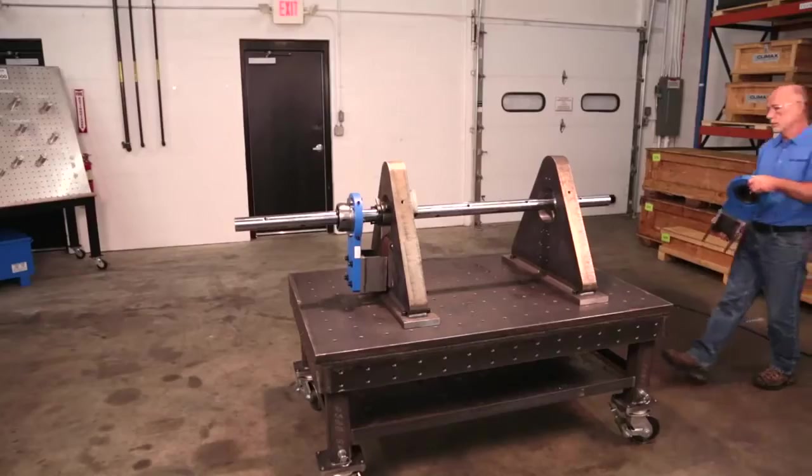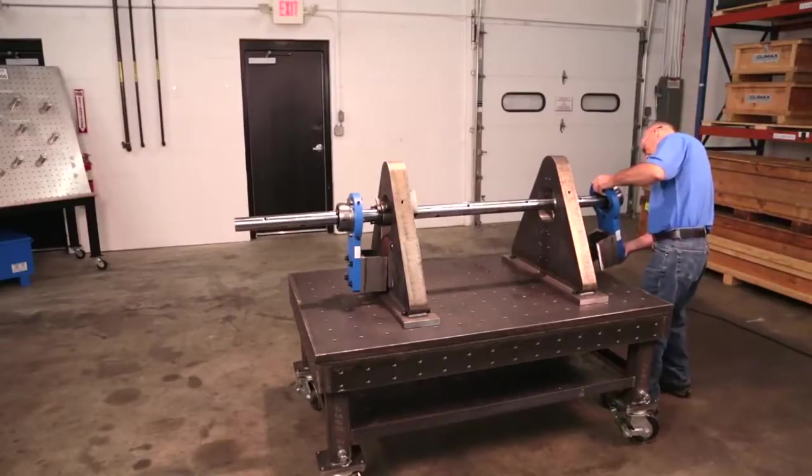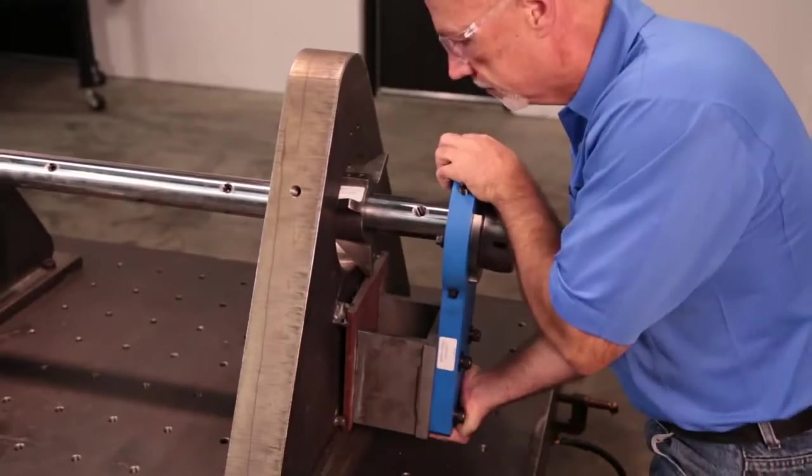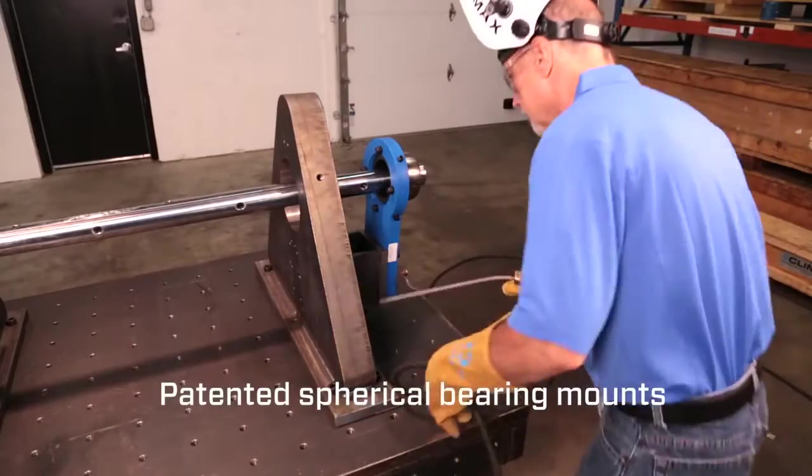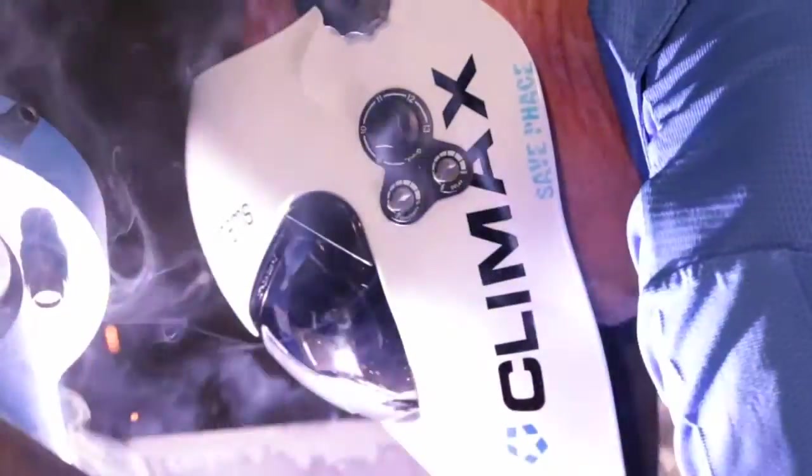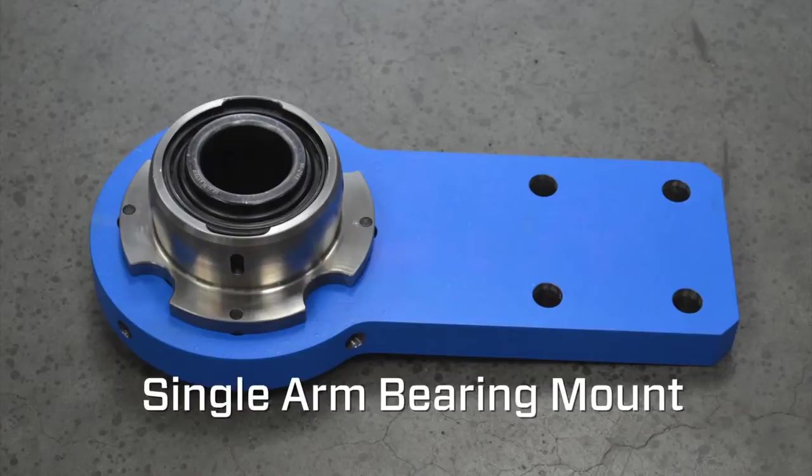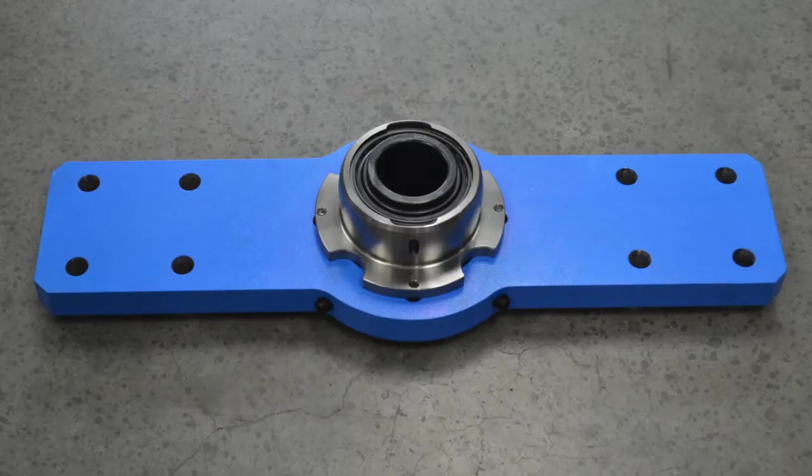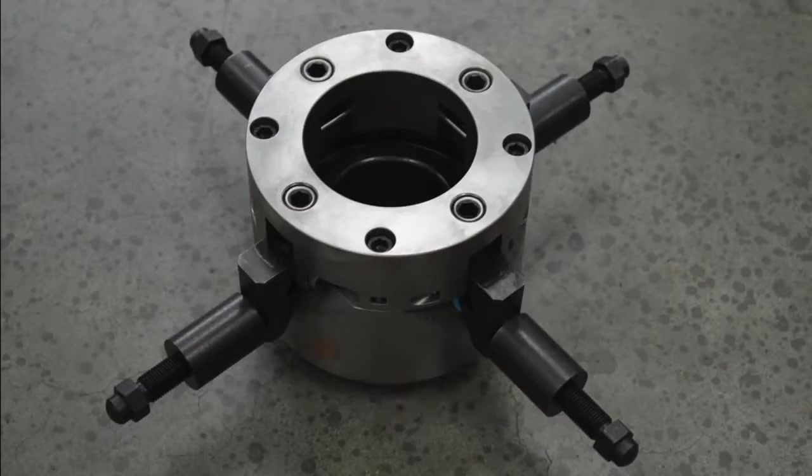Slide on the spherical bearing mounts with the tack weld plates and tack weld them to the workpiece. Patented spherical bearing mounts can be mounted up to 5 degrees out of perpendicular alignment. The spherical bearing mounts are available in single arm, double arm, universal and ID mount styles.